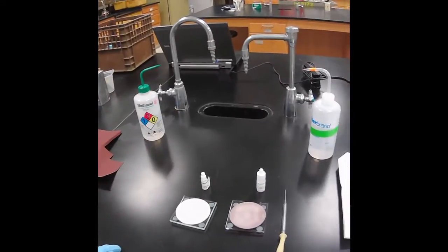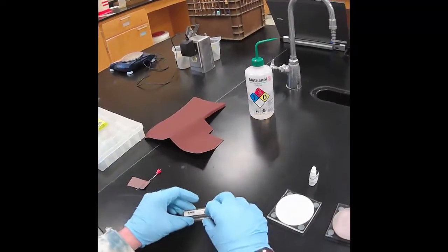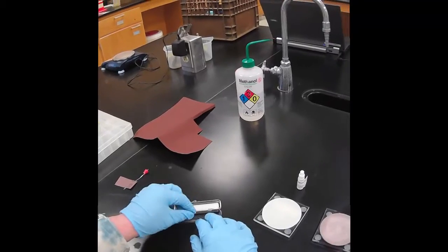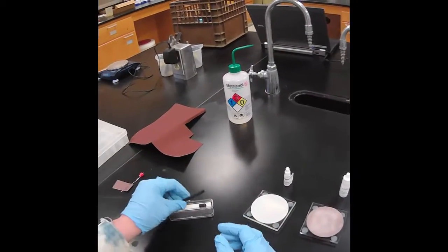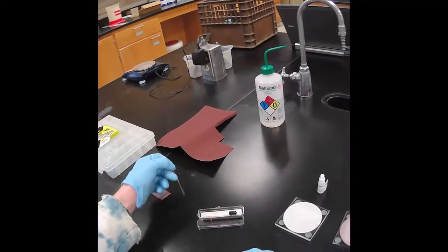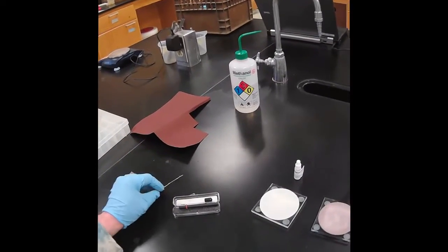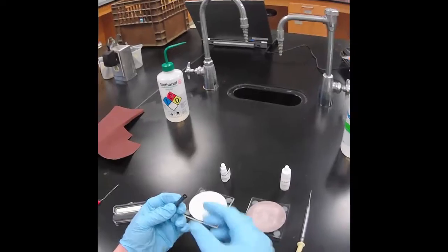For the electrochemistry experiment, we're going to use a gold working electrode, gold disc here, and then we're also going to use a silver reference wire. So I'll show you in this video how to clean these electrodes.